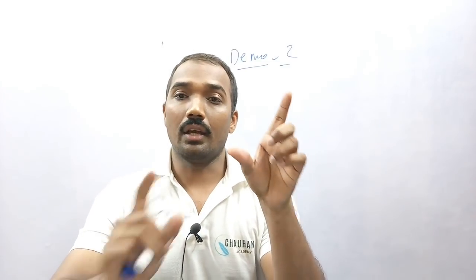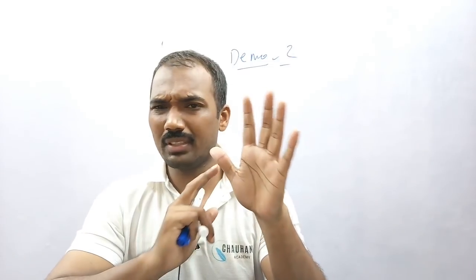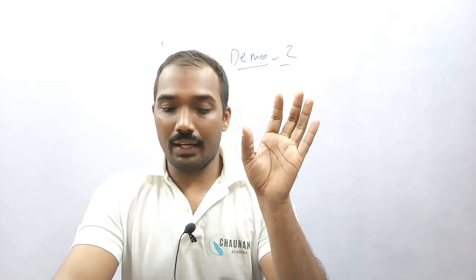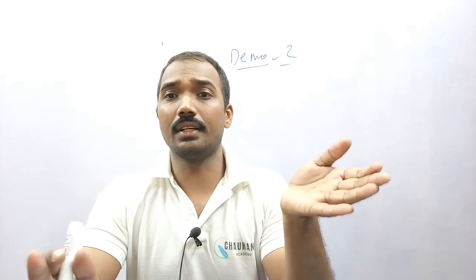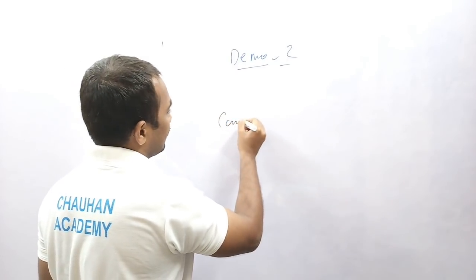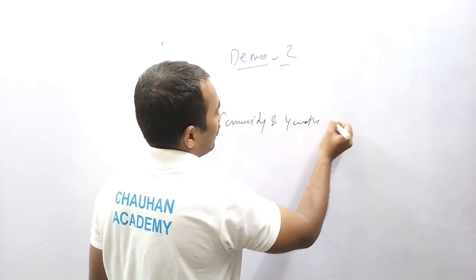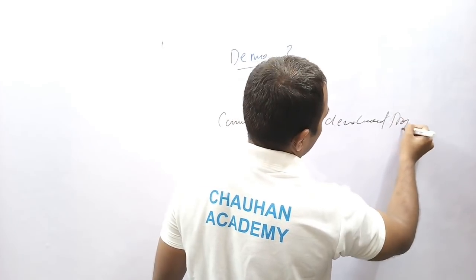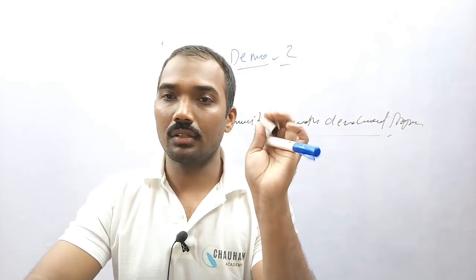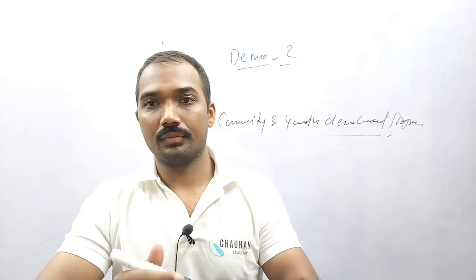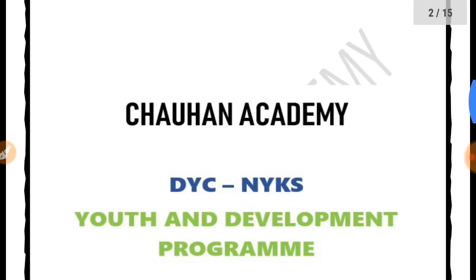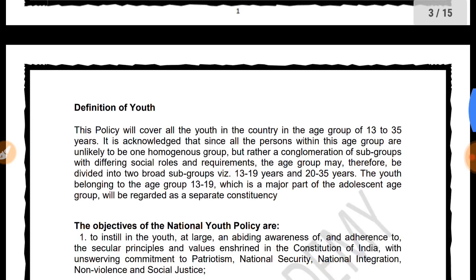This is the most important topic of the GS section and the most problematic area for aspirants — particularly for this section. Many don't know exactly what to study. So we are starting from this section and will discuss the topic Community and Youth Development Program, covering each and every topic, beginning with: what is youth?